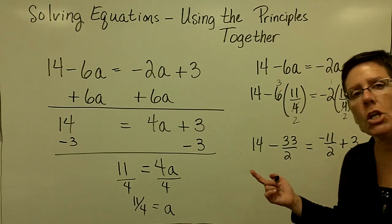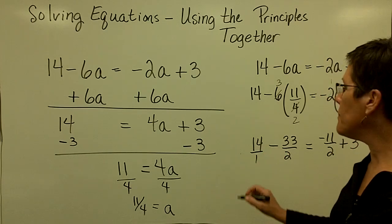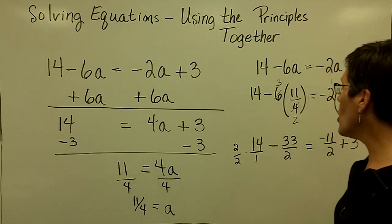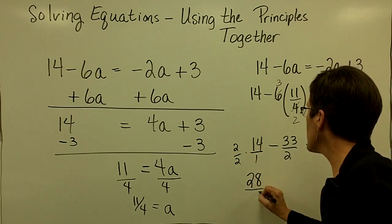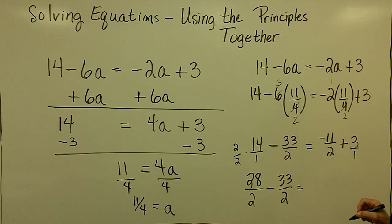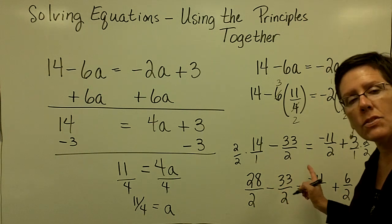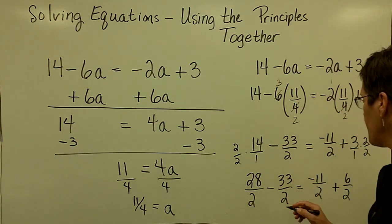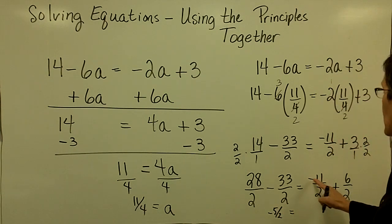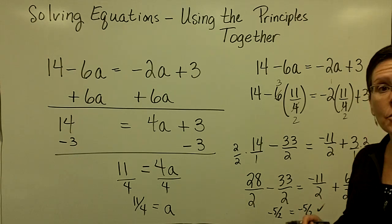So 14 minus 33 over 2. Here I'm going to reduce. That is a negative 1 times 11 is a negative 11 halves plus the whole number 3. I think I'm just going to cause the whole numbers to have a common denominator of 2. So the number 14, which is 14 over 1, I'm going to write it as 28 over 2. So 28 over 2 minus 33 over 2. So right here, the number 3, which has a 1 in the denominator, I'm going to multiply it top and bottom by 2. So I'm going to call it 6 halves. And I'm going to add to it the negative 11 halves. 28 minus 33 is a negative 5 over 2. And a negative 11 plus 6 is a negative 5 over 2. And they do indeed check.